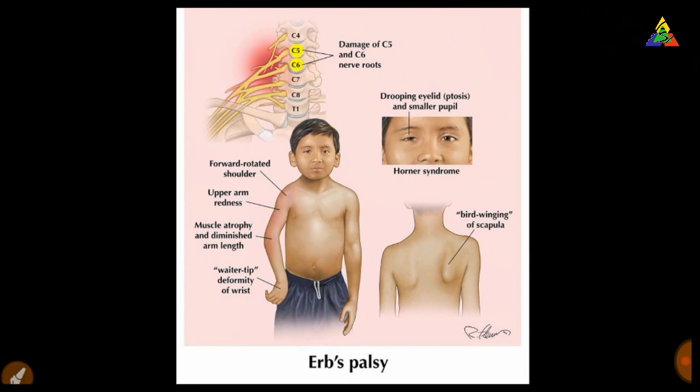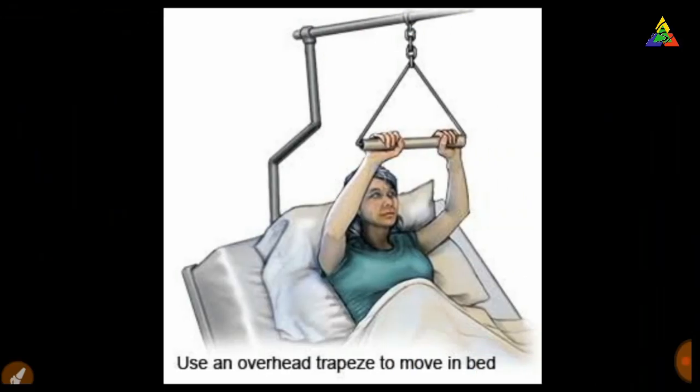In this image, the condition is IPS palsy. The next condition shows a trapeze bar. An overhead trapeze is used to help the patient move in bed or to remove bedpan.